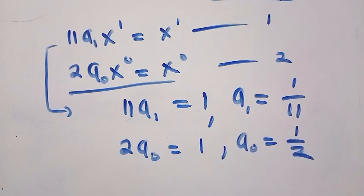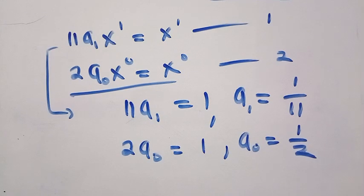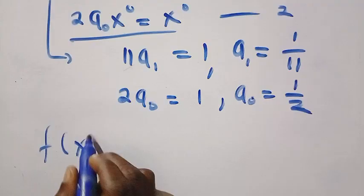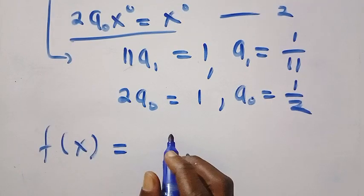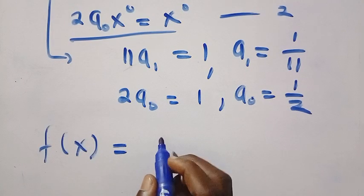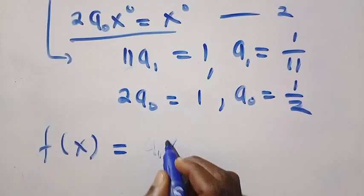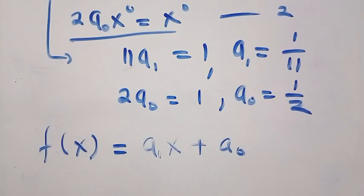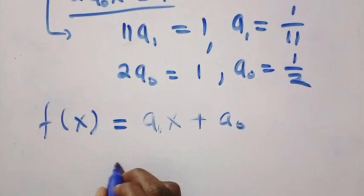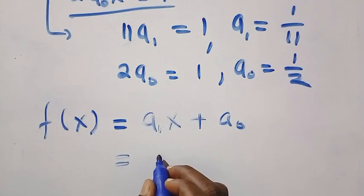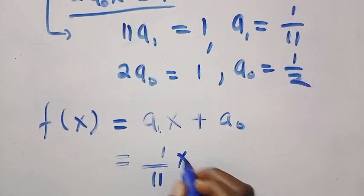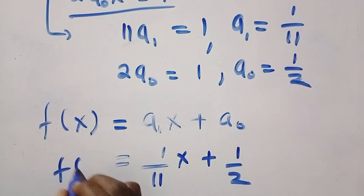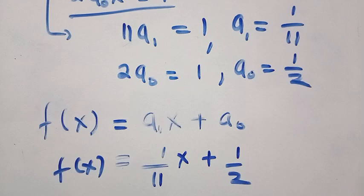So after having this, we are now going to substitute back into the function that we have, which is f of x equals, we are going to have f of x equals a_1 x plus a_0. And where a_1 is giving us 1 divided by 11, then x plus 1 divided by 2. This is for f of x. And here is the final answer to this problem.